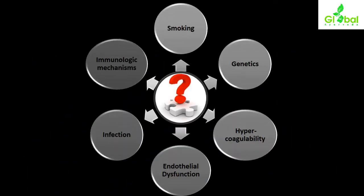The etiological factors of TAO include: the role of smoking, genetic causes, hypercoagulability, endothelial dysfunction, role of infection, and immunological mechanisms. These factors play an important role in the further progression of the disease and will be discussed in detail in the next part. Thank you.